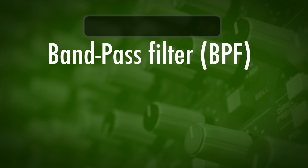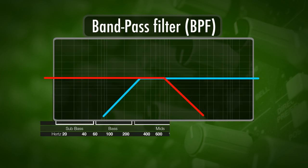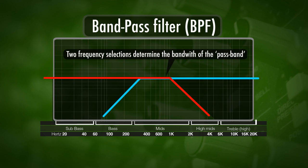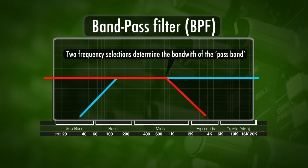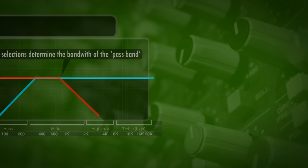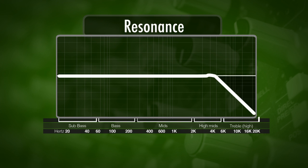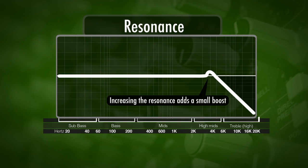When working with a band pass or band cut filter, we usually have two frequency selections — one for each side of the filter. The next function is the resonance, which is actually a small boost at the edges of our frequency selection.